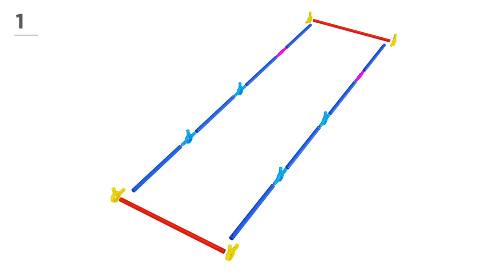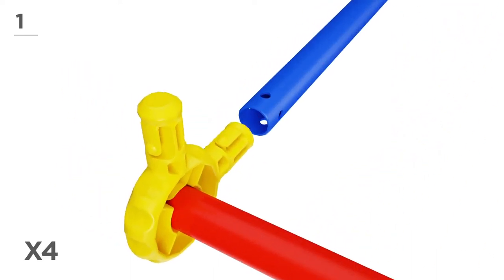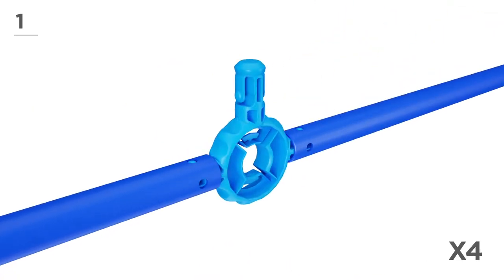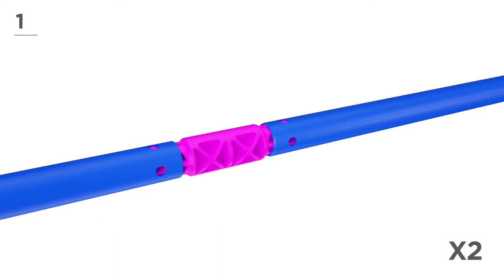Ready? Let's get started! First, begin to build the bottom using 2 red poles, 8 navy poles, 4 yellow connectors, 4 blue connectors, and 2 pink connectors. Then, snap-and-click all parts together, like this.